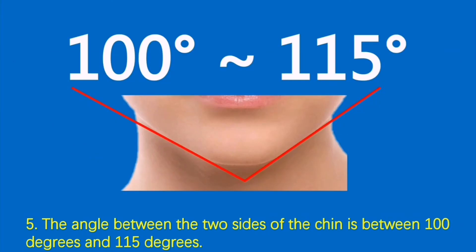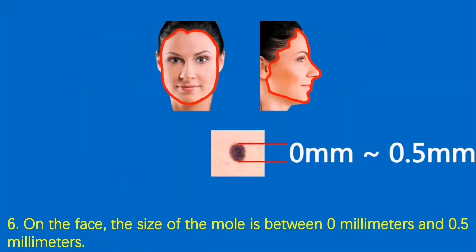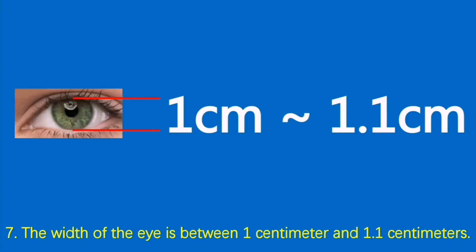5. The angle between the two sides of the chin is between 100 degrees and 115 degrees. 6. On the face, the size of the mole is between 0 millimeters and 0.5 millimeters. 7. The width of the eye is between 1 centimeter and 1.1 centimeters.